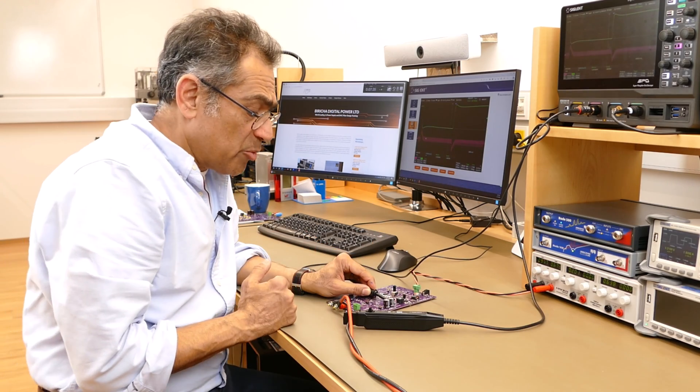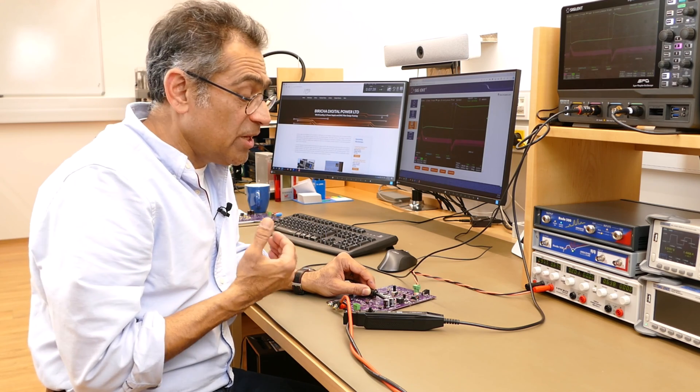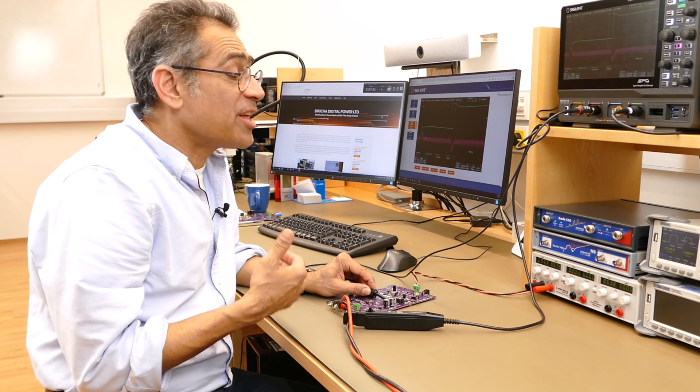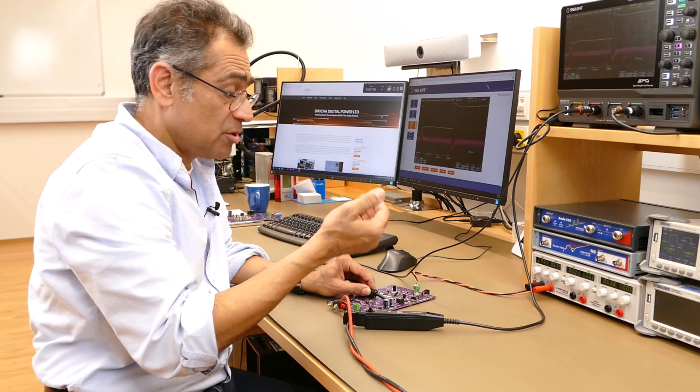So this is now my current mode controller and now we're looking at it on the oscilloscope. We showed earlier that the loop response does not change and therefore as I change my input voltage, I don't expect the transient response to change.